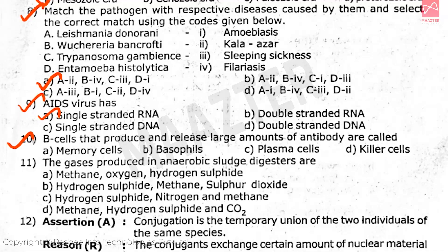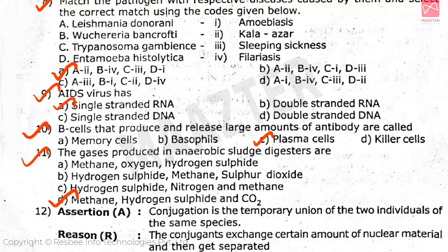Question 10: Cells that produce and release large amounts of antibodies are called — the correct answer is option C. Question 11: The gases produced in anaerobic sludge digesters are — the correct answer is option D.